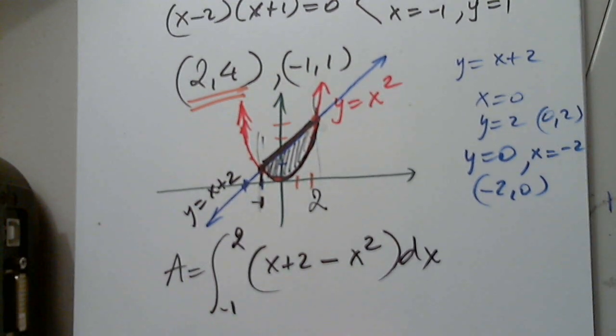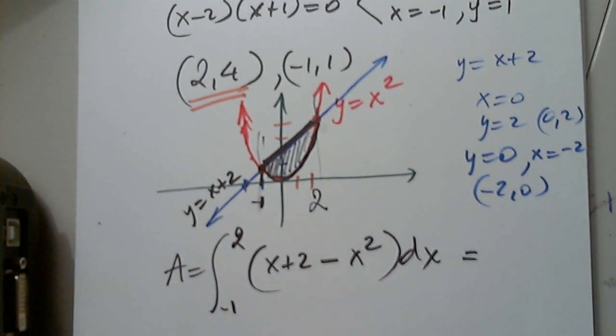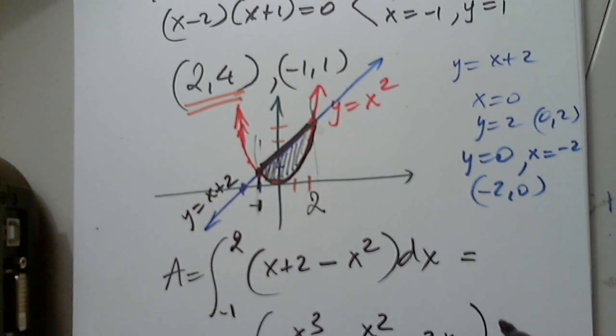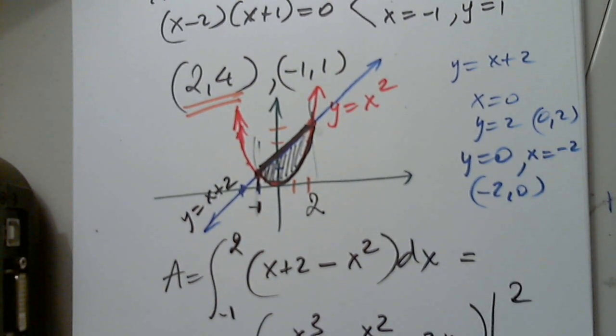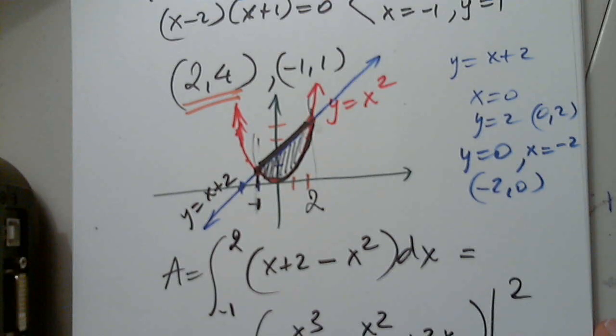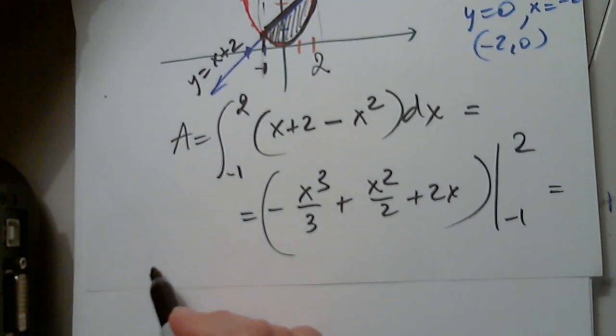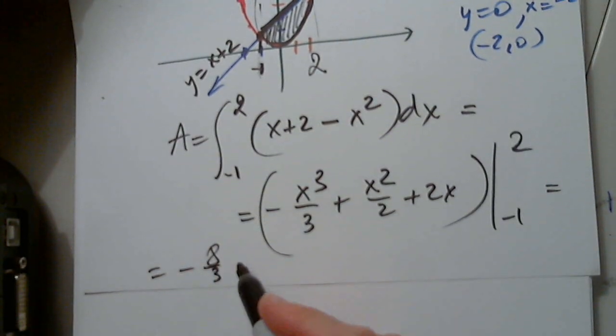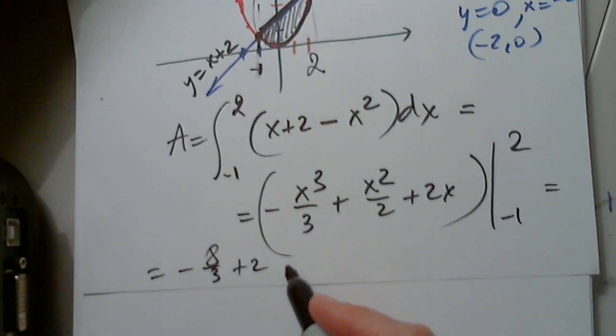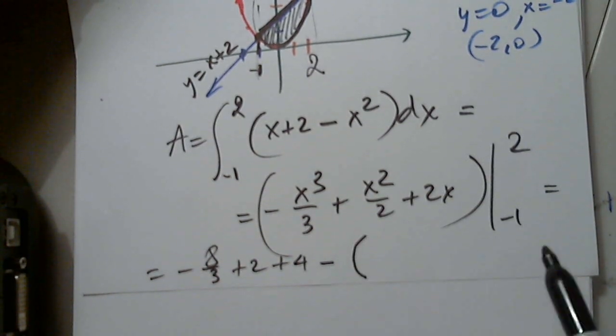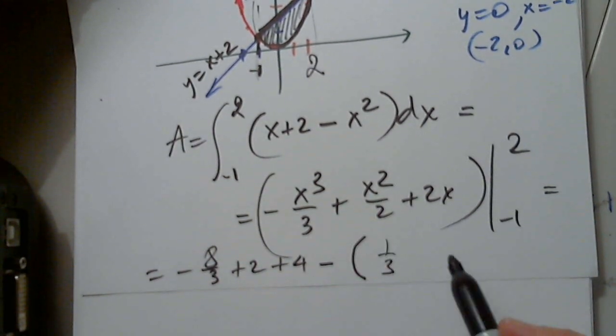So, I get negative x to the third over 3, plus x squared over 2, plus 2x, in the correct order, from negative 1 to 2. And I plug in the numbers. Negative 8 thirds, 4 over 2 is 2, 2 times 2 is 4, and then minus, careful parentheses, 1 third, plus 1 half minus 2.